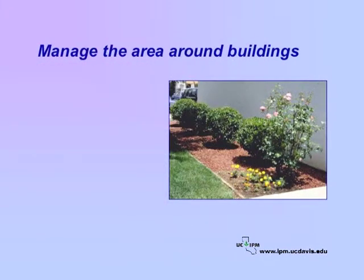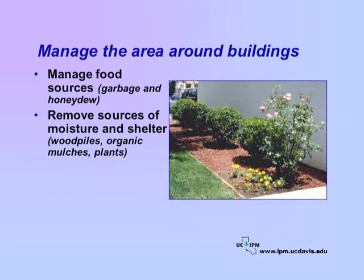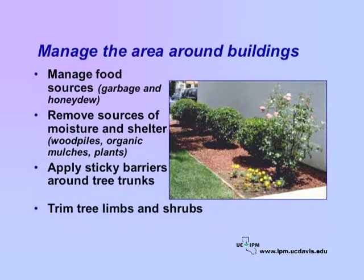Ants attracted to food and water sources next to buildings are more likely to invade — make that area inhospitable. Manage food sources such as garbage, and trees and shrubs with honeydew-producing insects such as aphids, whiteflies, or scales. Remove sources of moisture and shelter such as wood piles, organic mulches, grass, and other plants so that they are away from buildings. To keep ants out of honeydew-laden trees, apply a sticky barrier around trunks. Trim tree limbs and shrubs away from buildings.